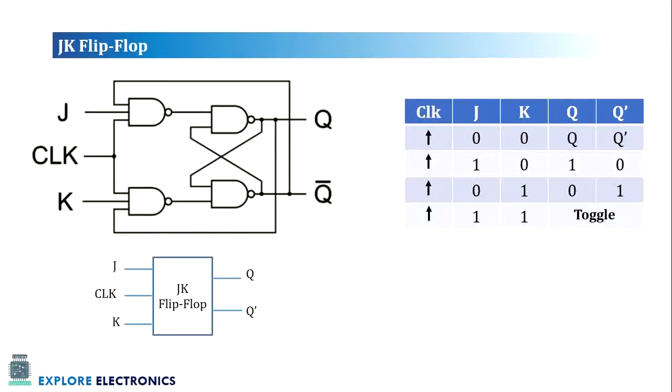And the next flip-flop is JK flip-flop. This is again a modified circuit of SR flip-flop. The Q bar input will be given to this gate. Q bar will be the feedback given to the first gate and Q is the feedback we are taking to the second gate. This becomes JK flip-flop.